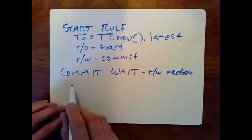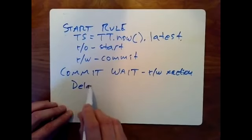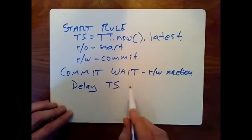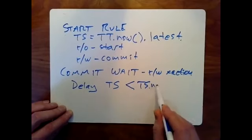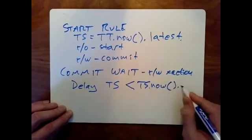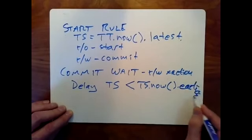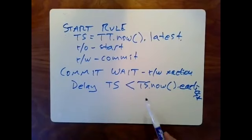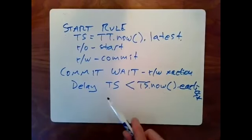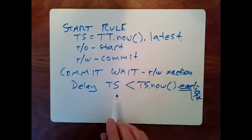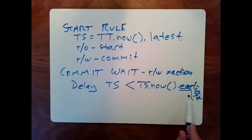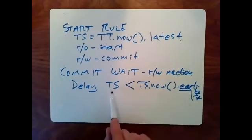A read-write transaction has to delay — sitting in a loop calling TT.now() — until the timestamp it chose at the beginning of the commit process is less than the current time's earliest half. What this guarantees is that since the earliest possible correct time is now greater than the transaction's timestamp, when this commit wait loop finishes, we are guaranteed the real time has passed the transaction's timestamp.